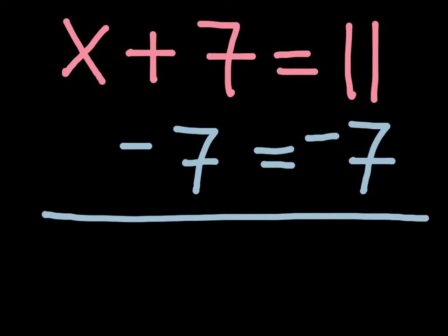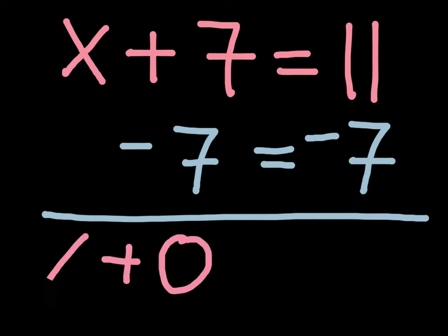When I, over here on the left, collect plus 7 and minus 7, I am left with 0 and I have my x from before. I bring down the equal sign.